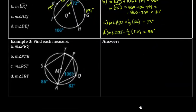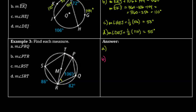Finally, we have Example 3 — another complicated picture where we're supposed to find four things: the measure of angle PRQ, the measure of angle PTR, the measure of angle RST, and the measure of angle SRT.